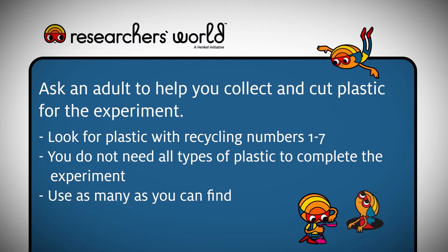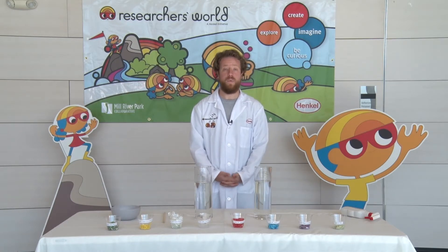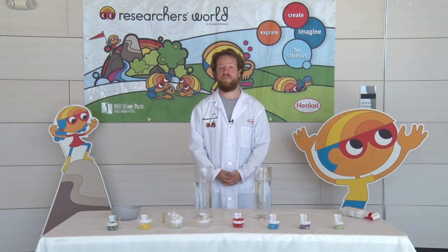We've prepared examples of seven different types of plastic that you can find in your daily life. There are many items we use that are made from plastics and we've chopped them up into small pieces to make it easier. If you decide to do that as well, please get a parent to help you so that you don't hurt yourself. Let me show you how to identify what types of plastics you have so that you can look around your home and find some for this experiment.